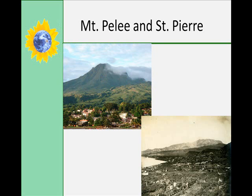Another example of the destructive power of pyroclastic flows occurred on the island of Martinique in the West Indies, when an eruption of Mount Pelée produced a pyroclastic flow that completely destroyed the city of St. Pierre. The force of the pyroclastic flow swept all of the buildings, inhabitants, and anything else in its path into the ocean. Some portion of the pyroclastic flow actually traveled over the ocean surface for several kilometers to burn ships moored in the harbor. Over 8,000 people were killed there in 1902.